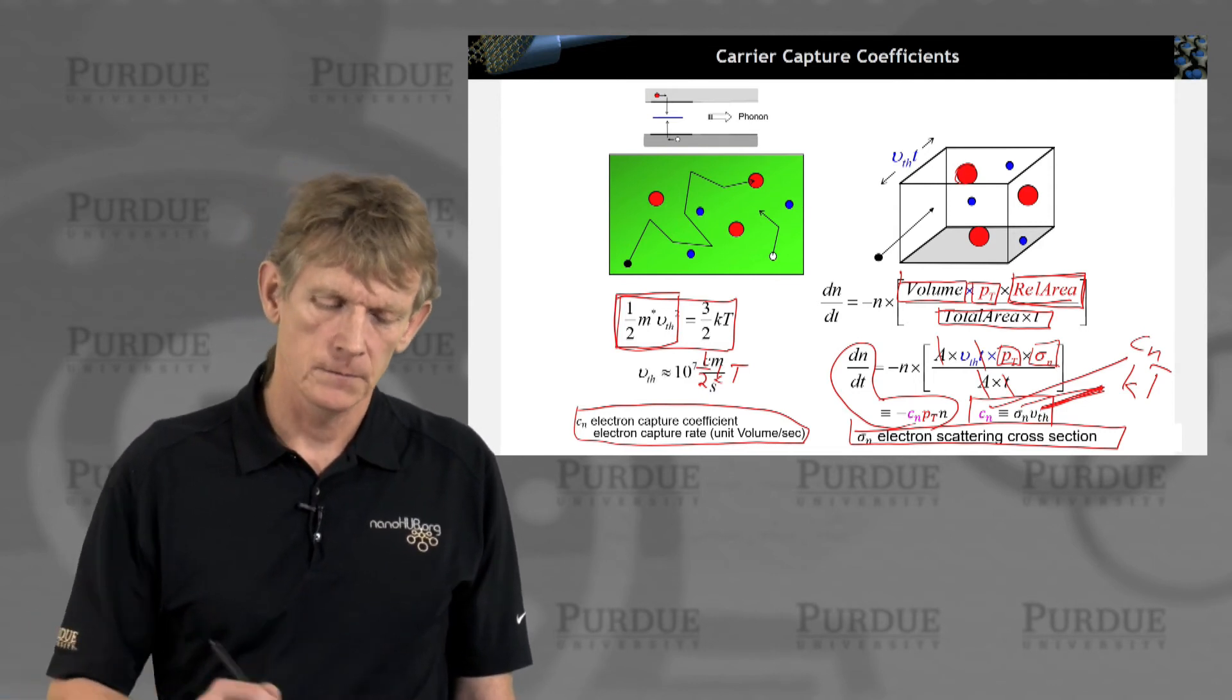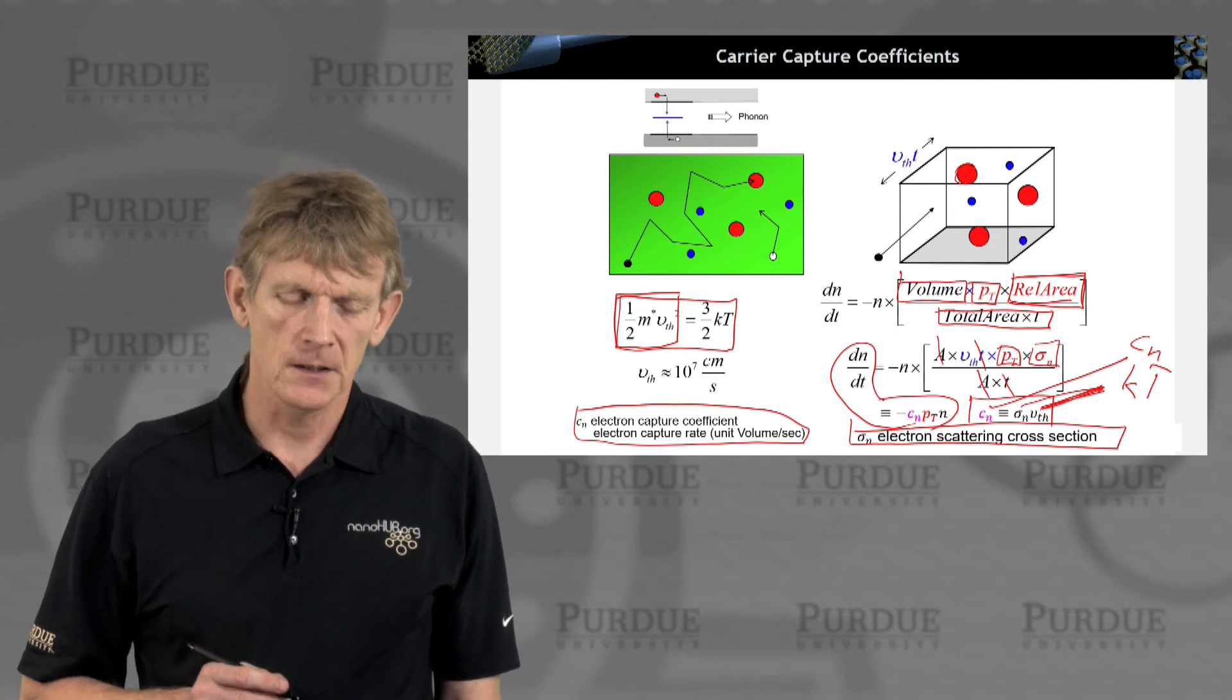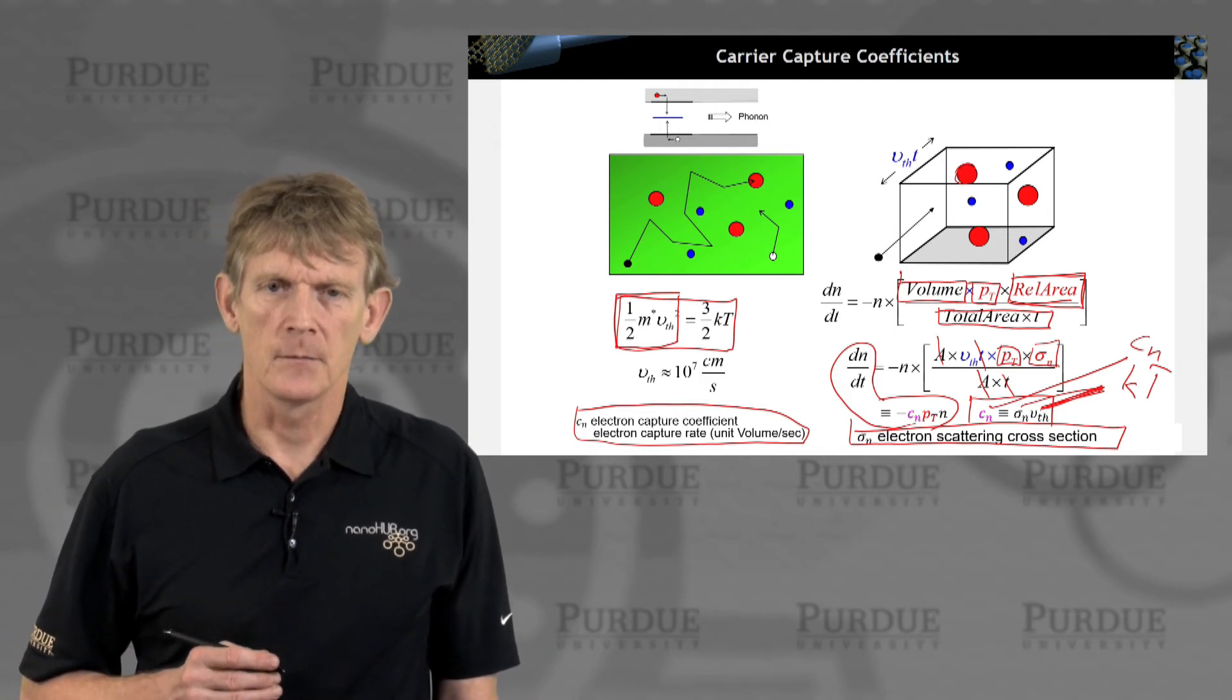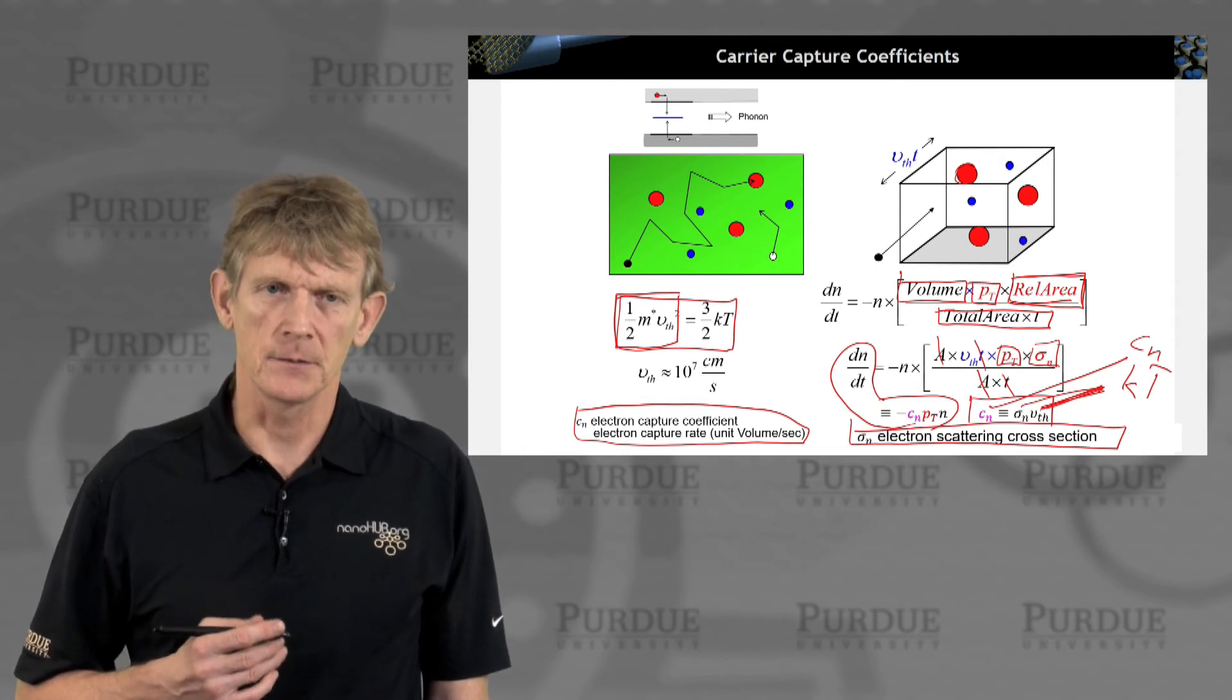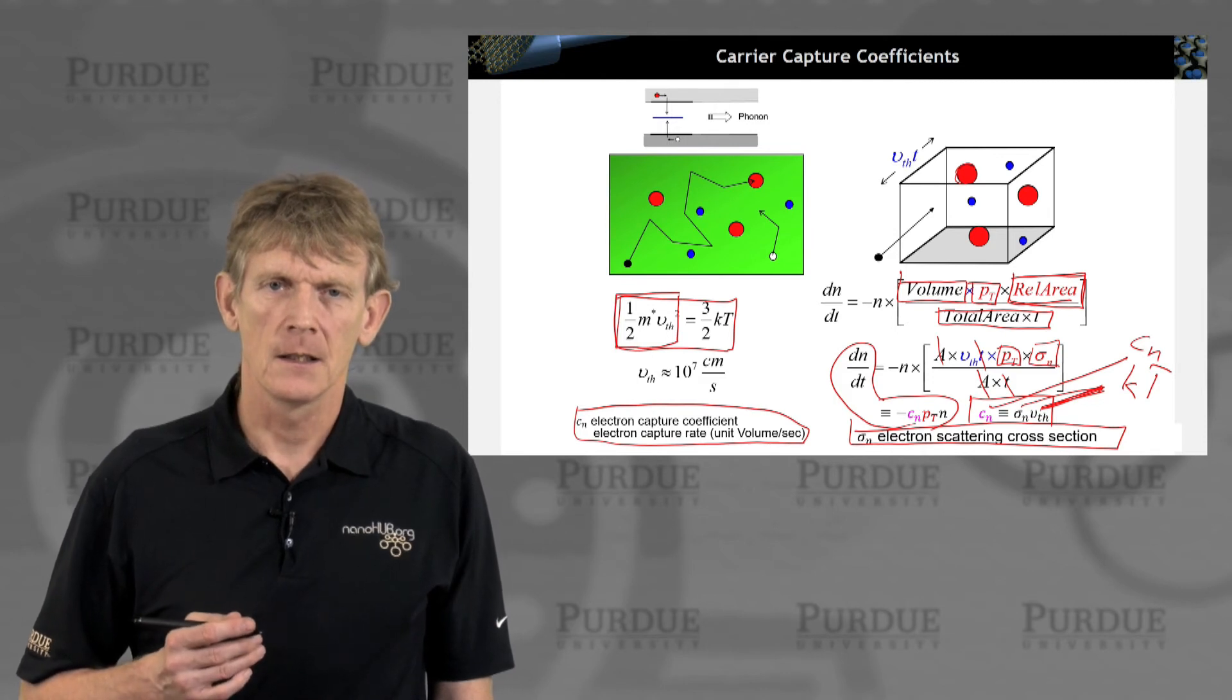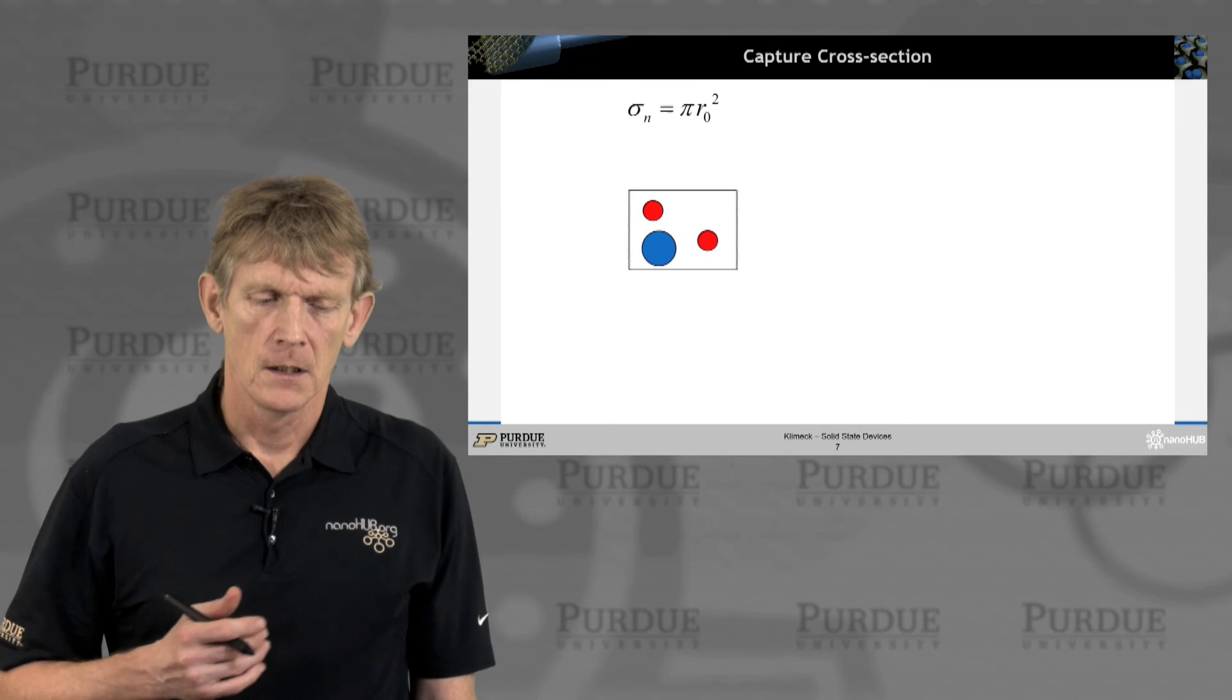But what does it mean? Typical thermal velocities are 10 to the seventh centimeter per second. So in the field of semiconductors, we very much use a metric system, but still lengths are usually in centimeters for historical reasons. So we typically don't deal with cubic meters or cubic nanometers. Even though cubic nanometers now make a whole lot more sense, people are thinking in terms of units of centimeters.